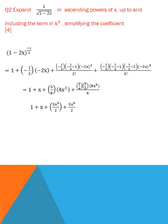The expansion is: 1 plus nx plus n(n minus 1) times x squared over 2 factorial, plus n(n minus 1)(n minus 2) times x cubed over 3 factorial. In this way we simplify and find the final answer: 1 plus x plus 3x squared over 2 plus 5x cubed over 2.